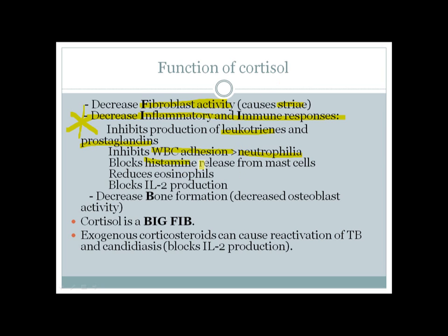Cortisol also blocks histamine release from mast cells, reduces eosinophil levels, and blocks interleukin-2 production. It decreases bone formation by reducing osteoblast activity. The mnemonic 'BIG FIB' helps remember cortisol functions: BIG for what it increases — Blood pressure, Insulin resistance, Glucose — and FIB for what it decreases — Fibroblast activity, Inflammation, Bone formation. Exogenous corticosteroids cause immunosuppression and can reactivate TB and candidiasis, mainly by blocking IL-2 production from CD4 T-cells.